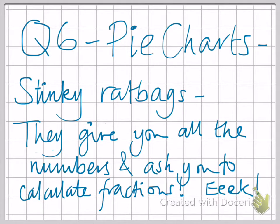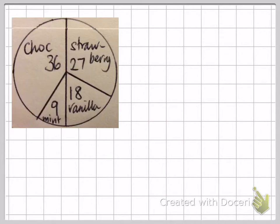Right, let's move on to the stinky ratbags. These don't come up very often, but they are quite challenging. Here we've got a situation where you're given a pie chart and you're given all of the numbers for all of the sectors, and you've got to see if you can work out what fraction of the whole circle each of those sectors is.